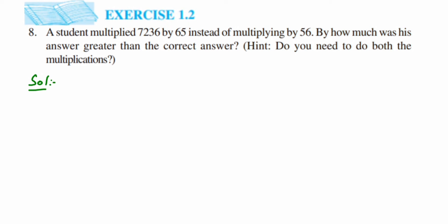So here is the solution. First I'm going to solve the wrong answer, okay? So I'm going to multiply this number 7236 multiplied by 65. So 6 times 5 is 30, then 6 times 3 is 15 plus 3 is 18, 5 times 2 is 10 and then 11, 7 times 5 is 35 and then 36.